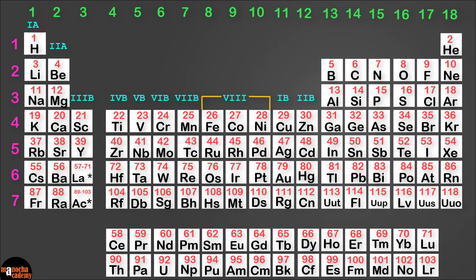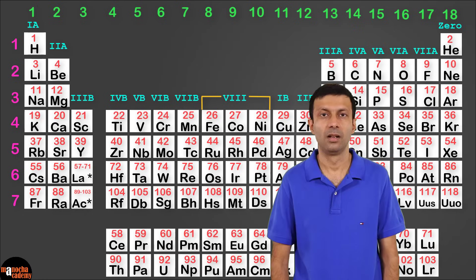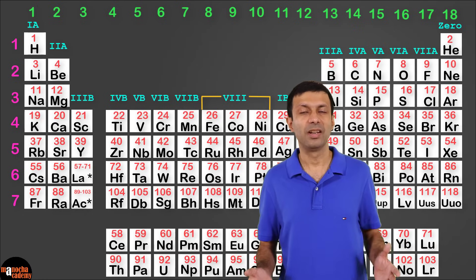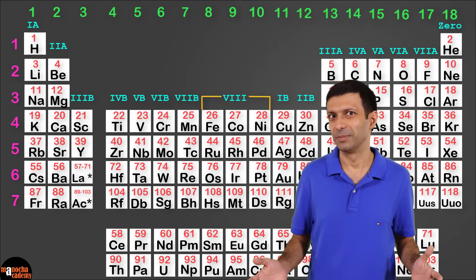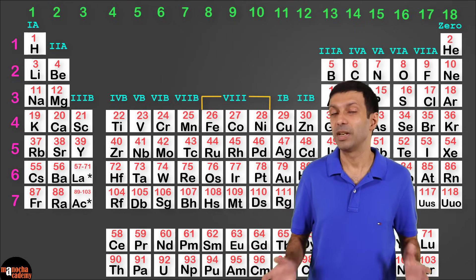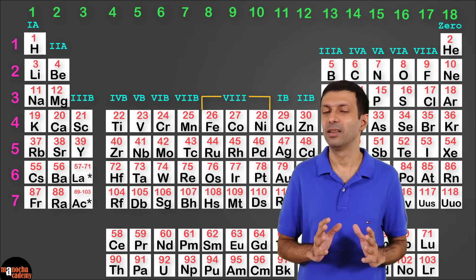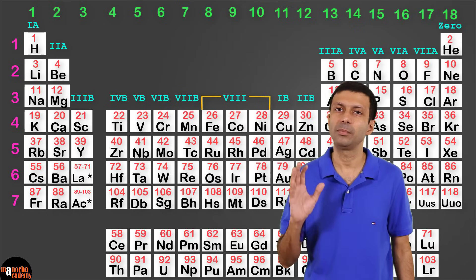And when you move on to 13, it's IIIA, IVA, VA, VIA, and group 17 is VIIA. And the last group, group 18, has the number 0. The new group numbering scheme is much easier to remember than the old one, but it's important to know the old one because sometimes it's used.